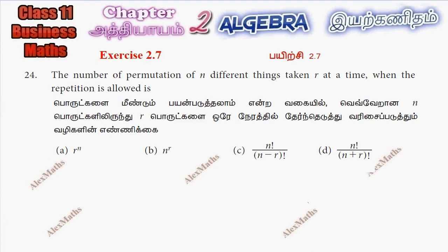Hi students, this is Alex here. Exercise 2.7, question number 24: the number of permutations of n different things taken r at a time, and the repetition is allowed.